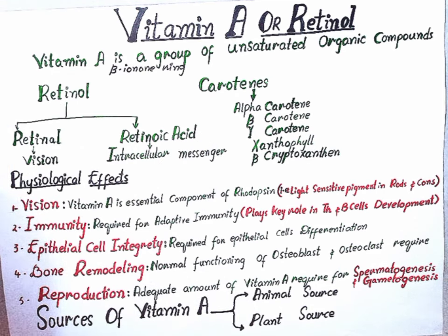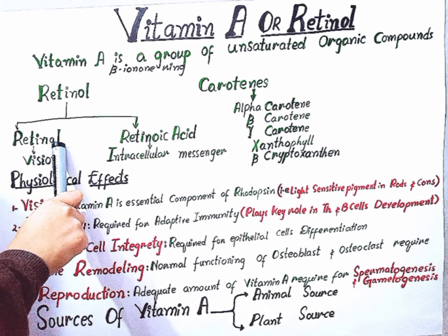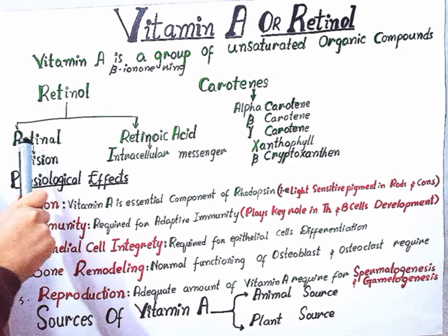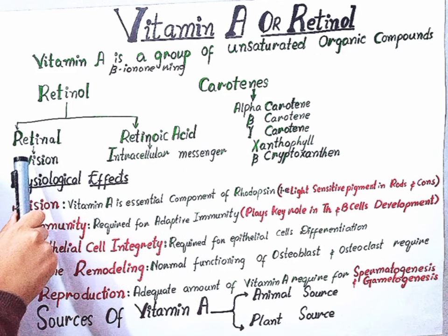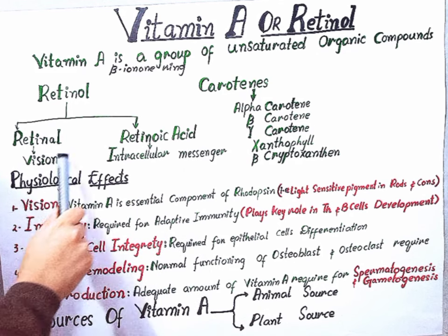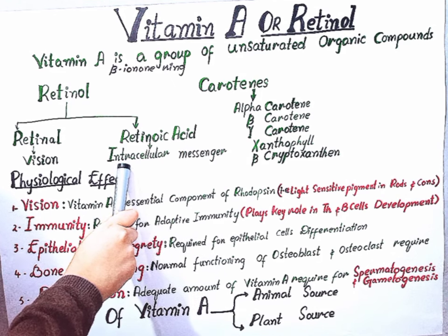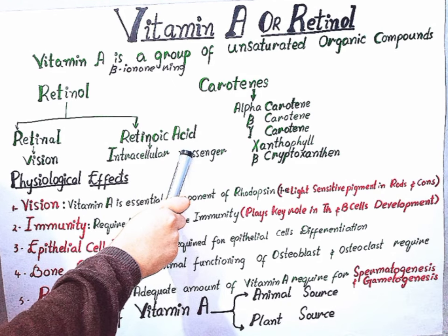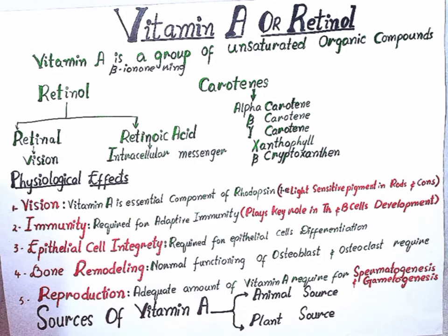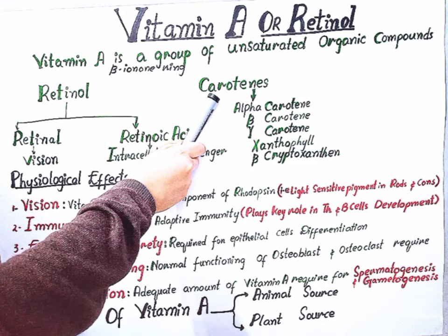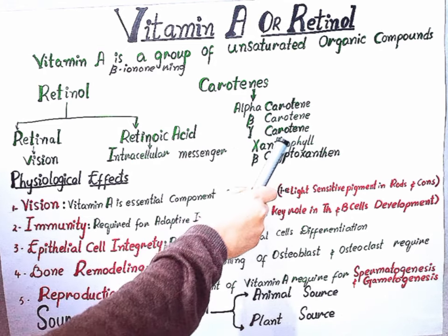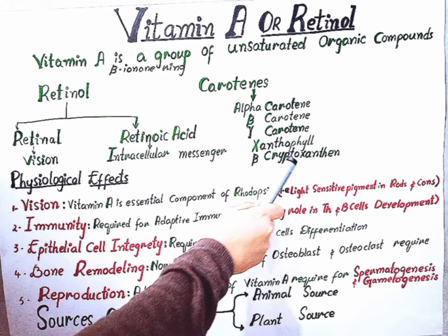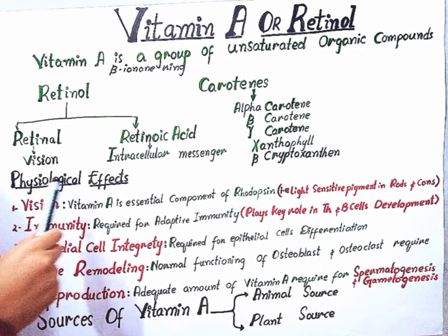Retinol is the immediate precursor of two important metabolites: retinal and retinoic acid. Retinol is very important for our retina. Retinoic acid serves as an intracellular messenger that affects transcription of a number of genes. The carotenes are found in many groups like alpha-carotene, beta-carotene, gamma-carotene, xanthophyll, and beta-cryptoxanthin.